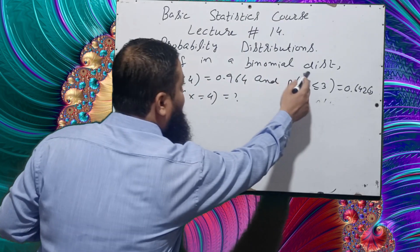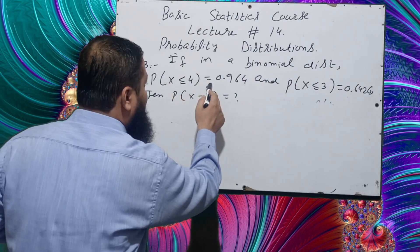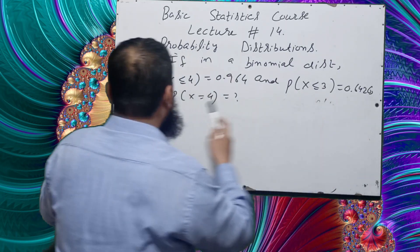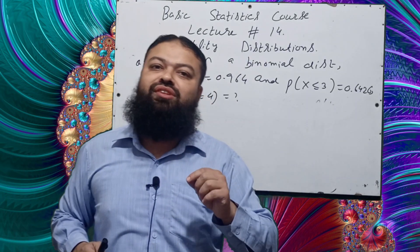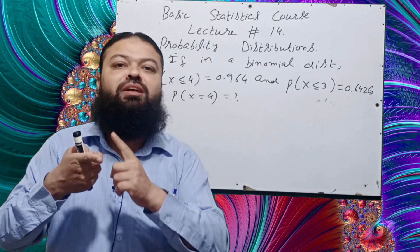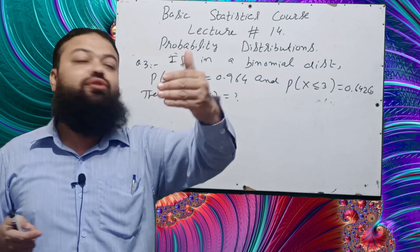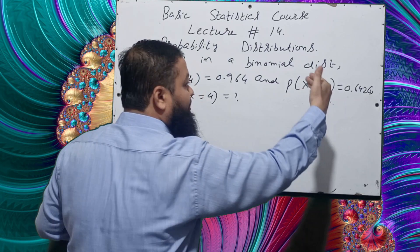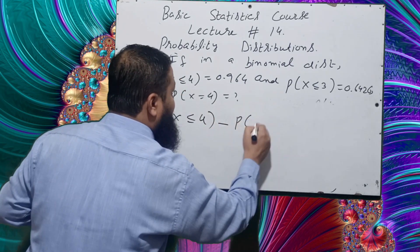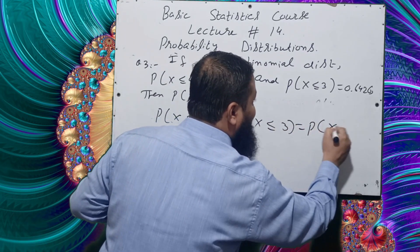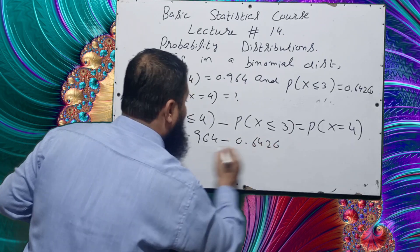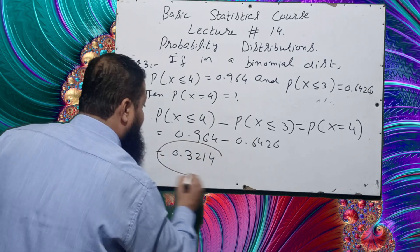Question number three: if in a binomial distribution P(X ≤ 4) = 0.964 and P(X ≤ 3) = 0.6426, then what is P(X = 4)? We know P(X ≤ 4) includes all probabilities from X = 0 to X = 4, and P(X ≤ 3) includes X = 0 to X = 3. Therefore P(X = 4) = P(X ≤ 4) − P(X ≤ 3) = 0.964 − 0.6426 = 0.3214, which is the correct option.